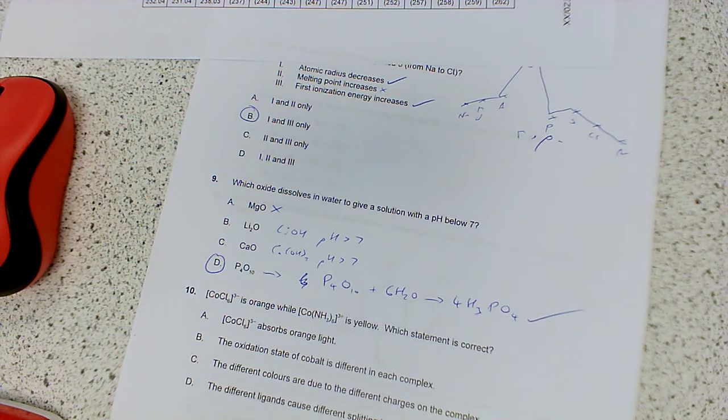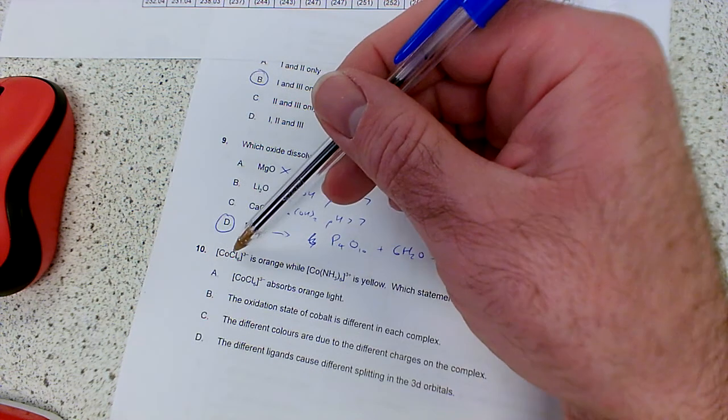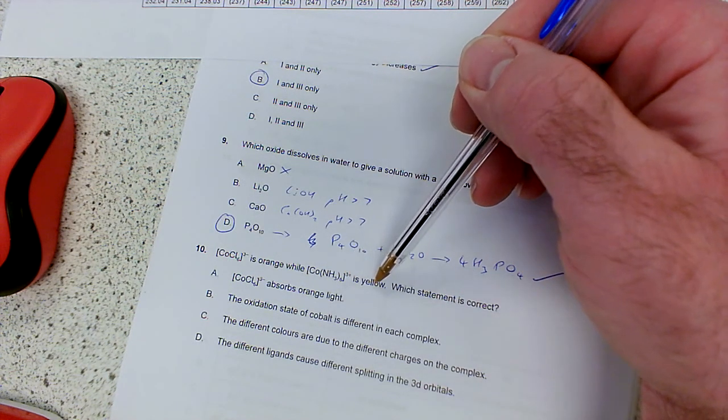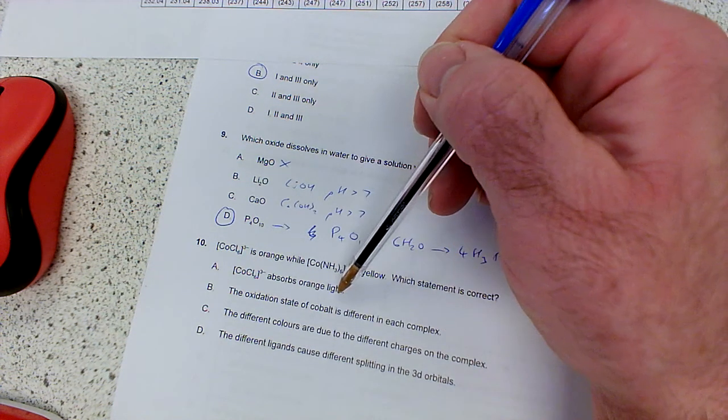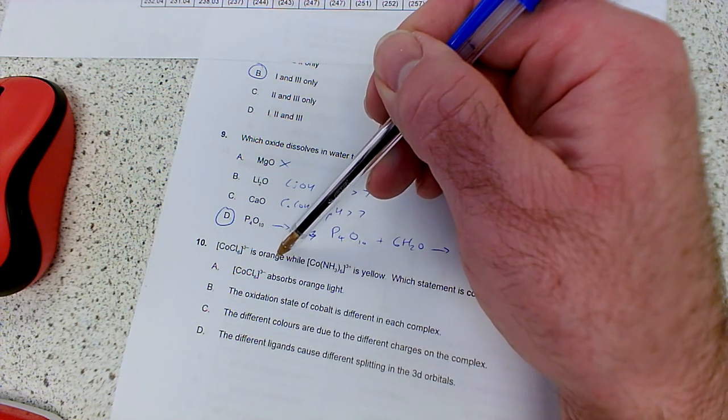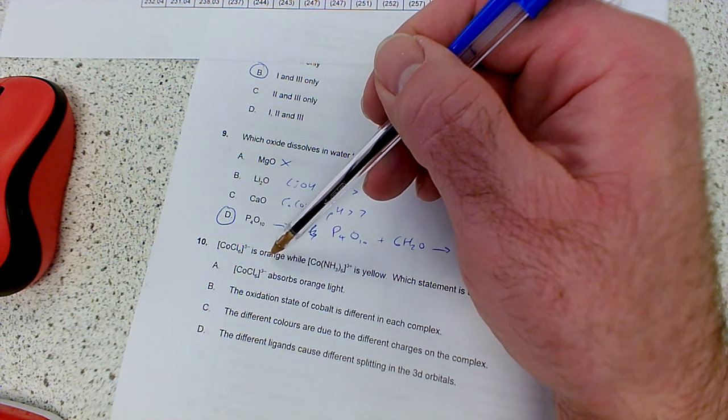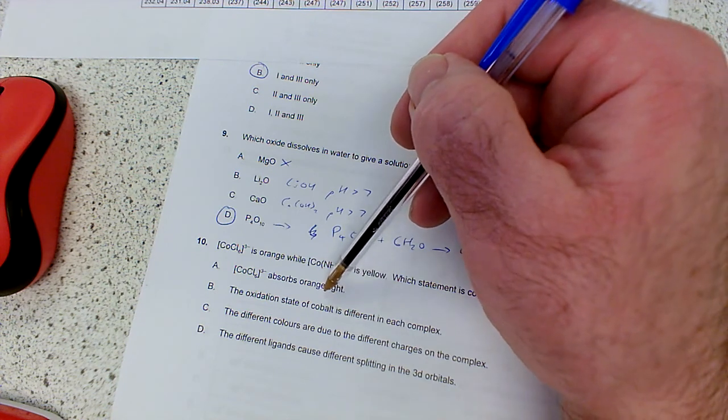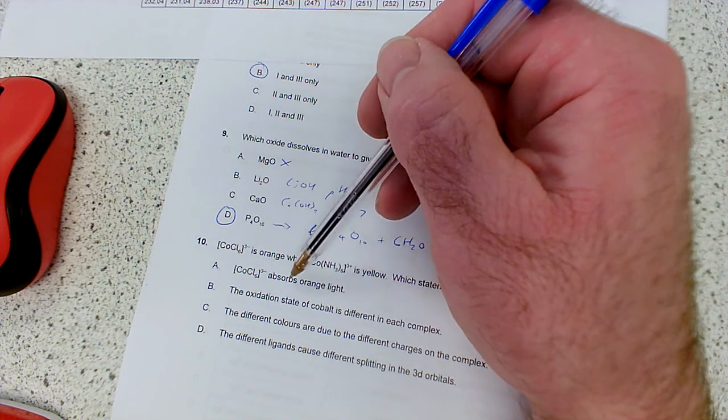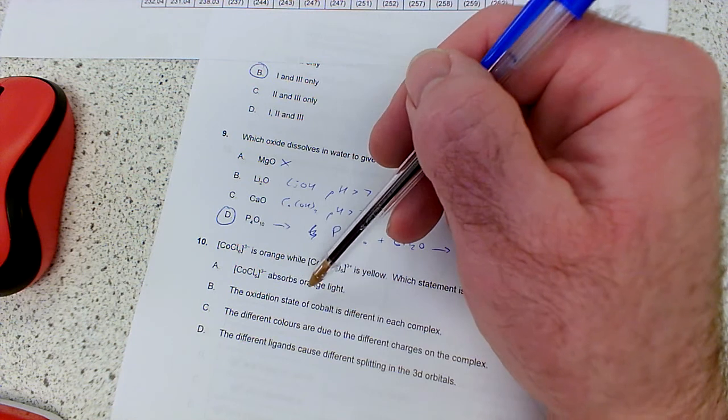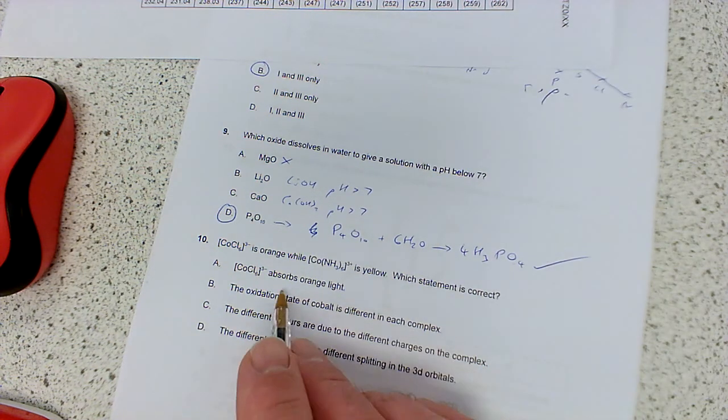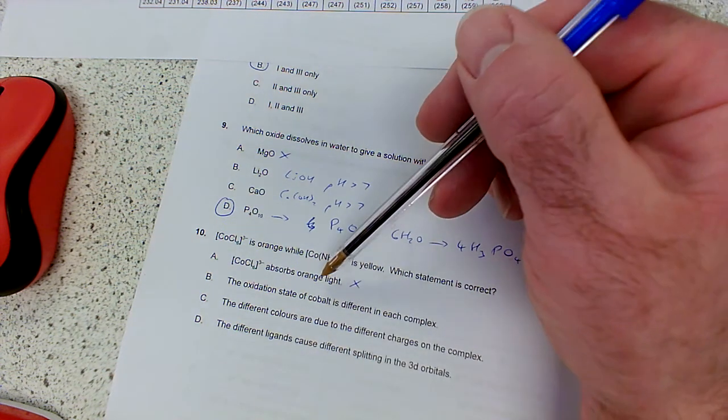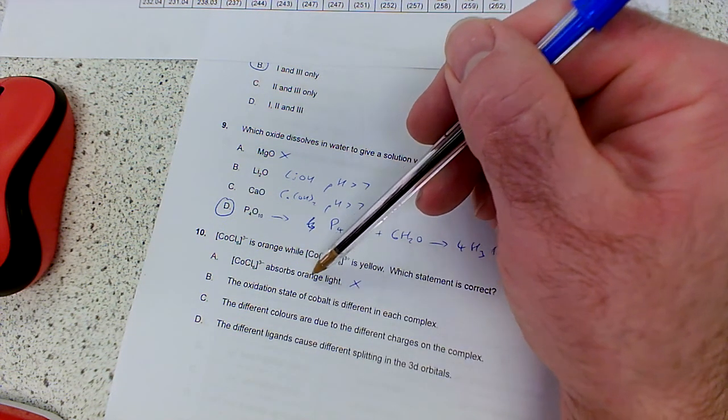So, the hexachloro cobalt ion is orange, but the hexaamine cobalt ion is yellow, which statement is correct. This one absorbs orange light. Well, no, it must absorb a different color to orange, because remember, we're not seeing, we see the remaining colors which are not absorbed. So when we come to look at the complementary color wheel, opposite orange, I think, is blue light. So, basically, it absorbs blue light, and then the remaining colors which are not absorbed pass through and appear orange overall. So, it doesn't absorb orange, because it appears orange. This is not absorbed. So, that's wrong. In fact, it would be blue light, and then white light minus the blue light would appear orange.